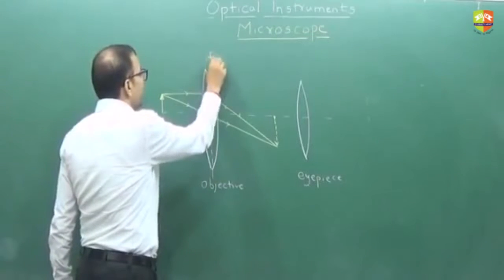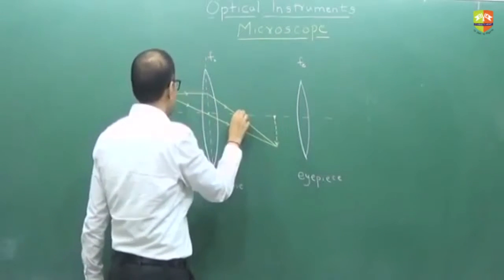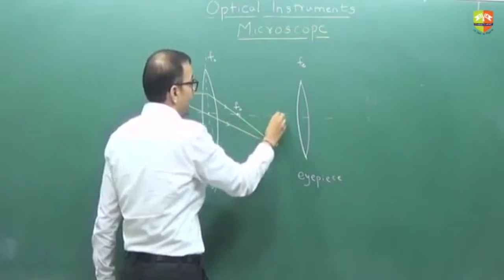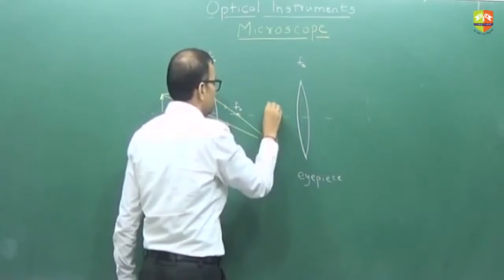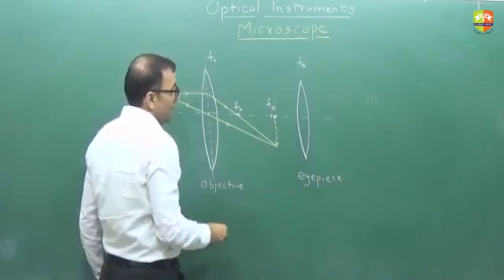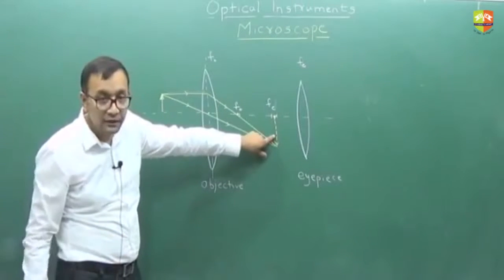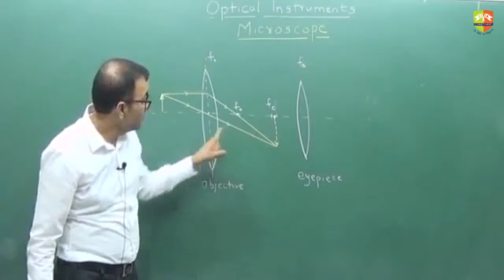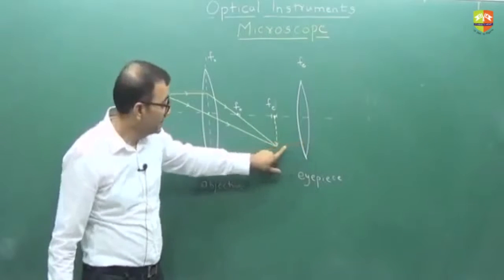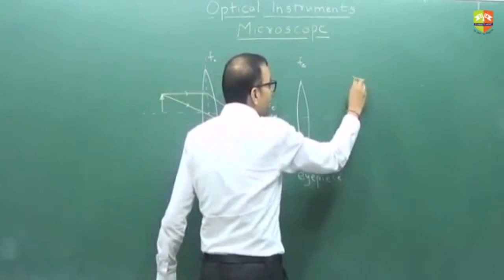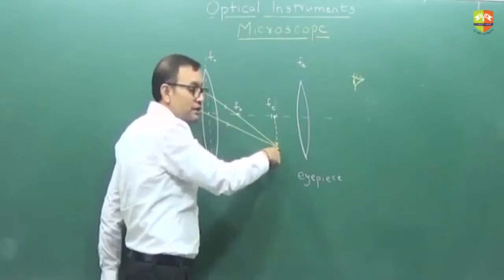This is fo and that is fe — the focal lengths. This point must be fo and this is fe. Now if you try to form the image of this particular object, this image is the object for the eyepiece. This is the intermediate image. Your observer is here, so the observer won't be able to see this directly — they will see the image of this through the eyepiece.